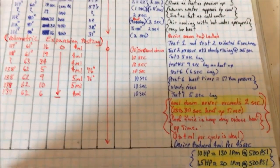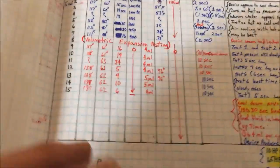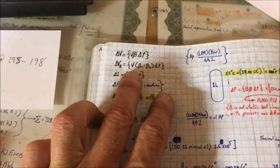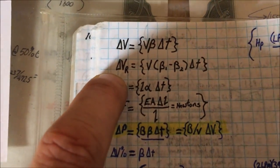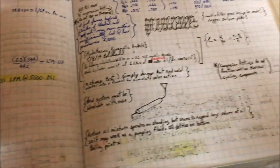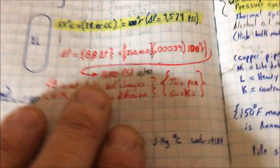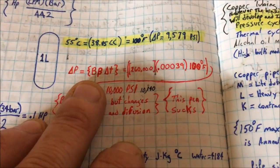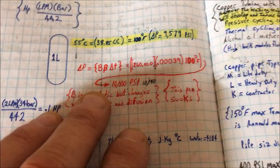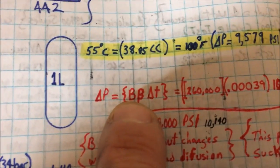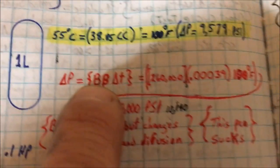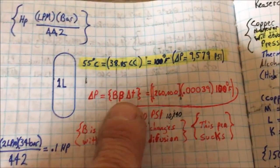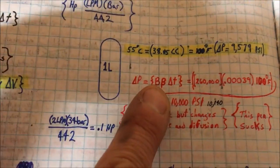You do that by subtracting the coefficient of volumetric expansions: take the largest one and subtract it from the smallest one, and that gives you the relative volumetric expansion. If your tube grows, the pressure you're going to get isn't what this equation says.